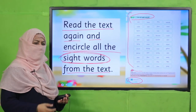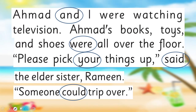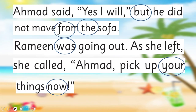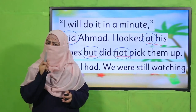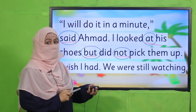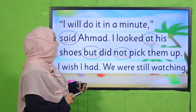Are you done with it? I hope you have circled all the sight words. Some examples are: 'it,' 'but,' 'from,' 'the,' 'was,' 'here,' 'now,' 'and,' 'said,' 'at,' 'but,' 'not.' If you found more words, you can talk to your teacher and confirm whether it is a sight word or not.